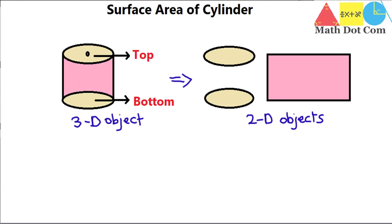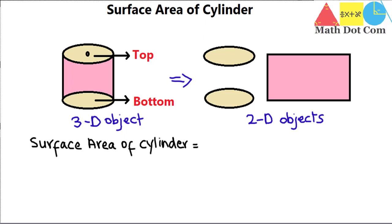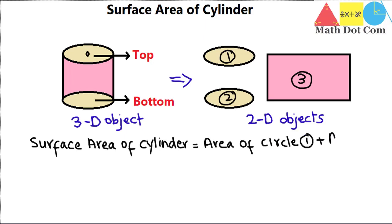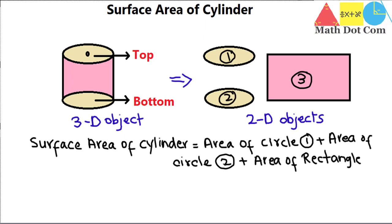So let's start with the area of the two circles and then the area of the rectangle. The surface area of the cylinder is equal to the sum of the areas of all three 2D objects. If I label them as circle number 1, circle number 2, and the third object as rectangle — that is: area of circle 1 plus area of circle 2. As we know, the area of a circle is equal to π r², so area of circle 1 is π r² and area of circle 2 is also π r².